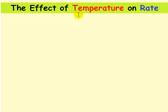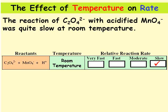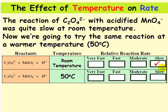Now we're going to have a look at the effect of temperature on reaction rate. The reaction of acidified MnO4- with oxalate ion was quite slow at room temperature as you saw. This time we're going to repeat the reaction except we're going to use a 50 degree solution. It's been in a 50 degree water bath.